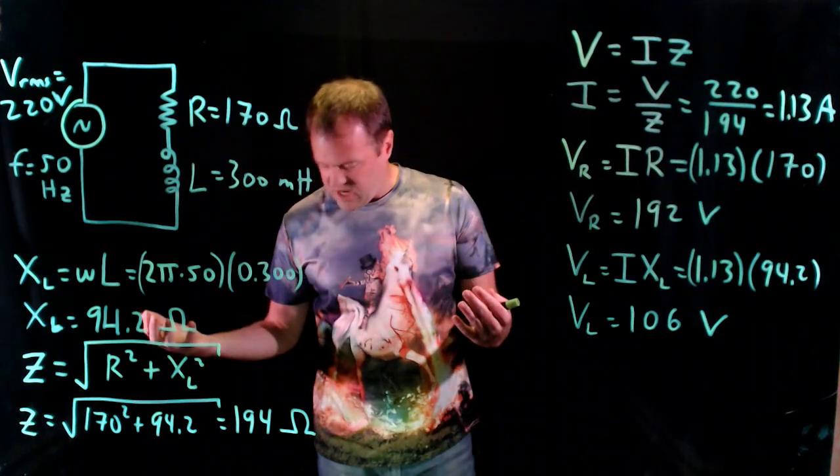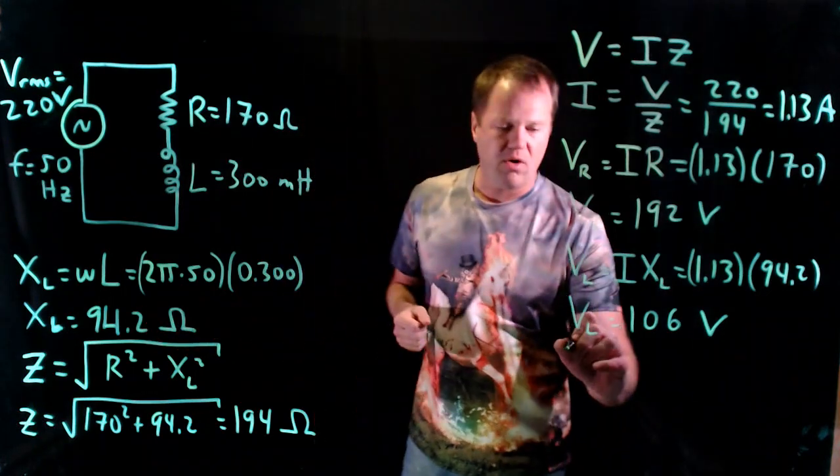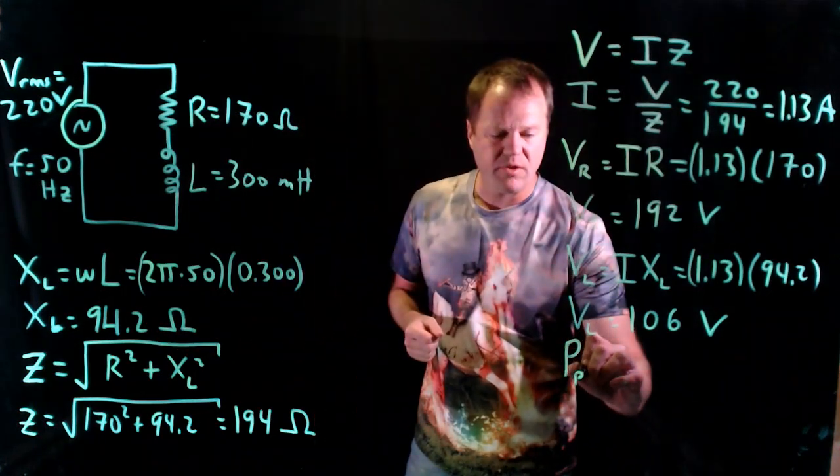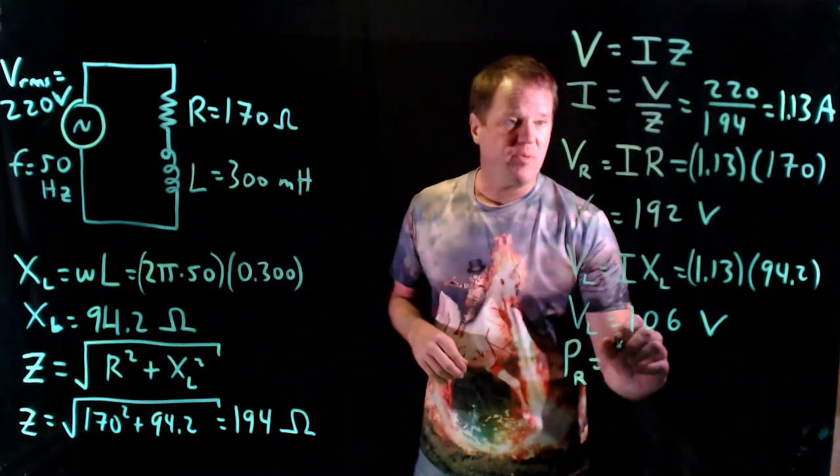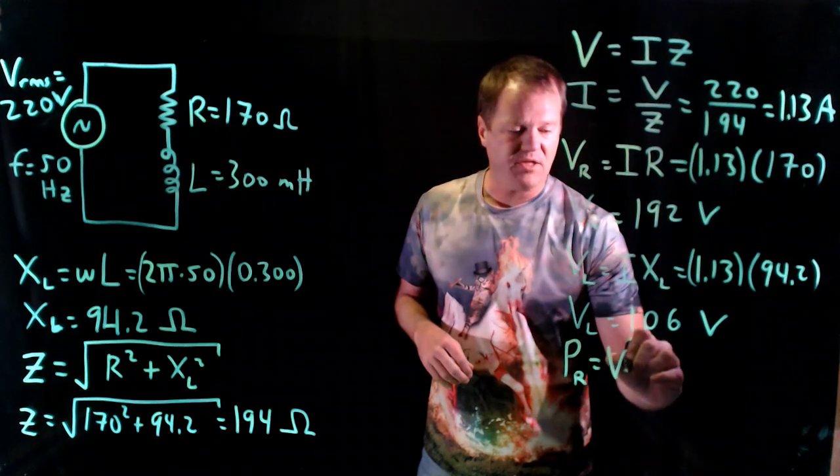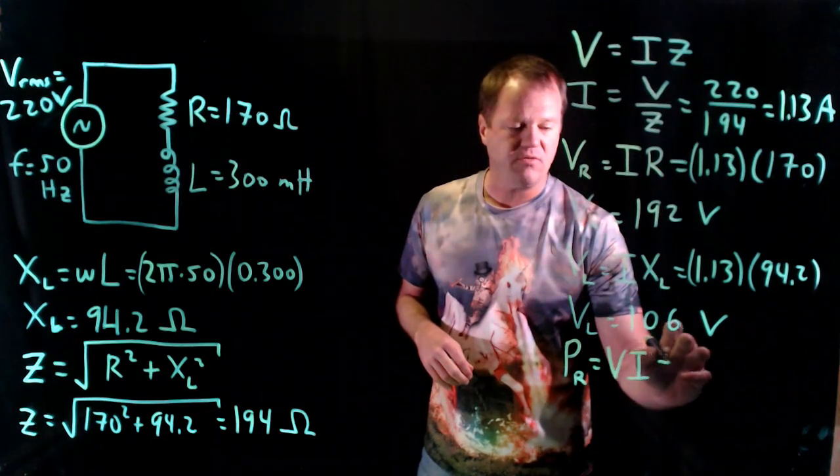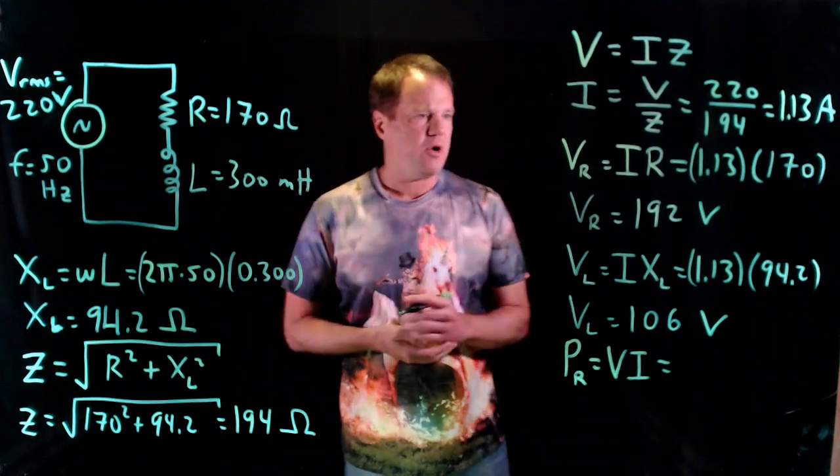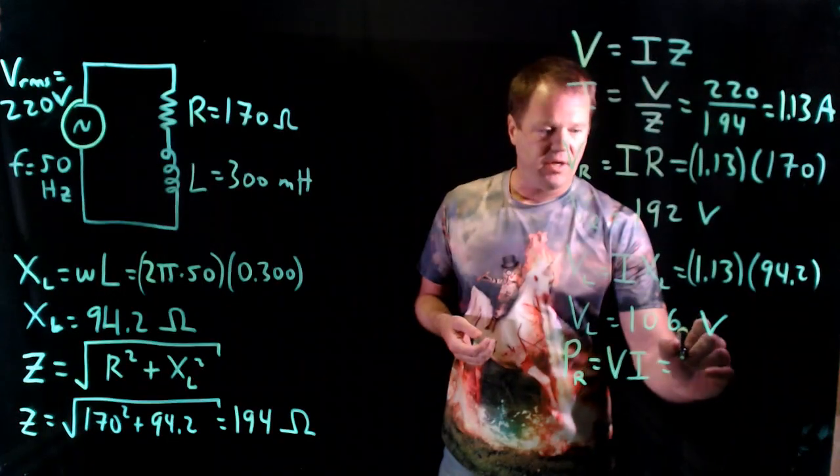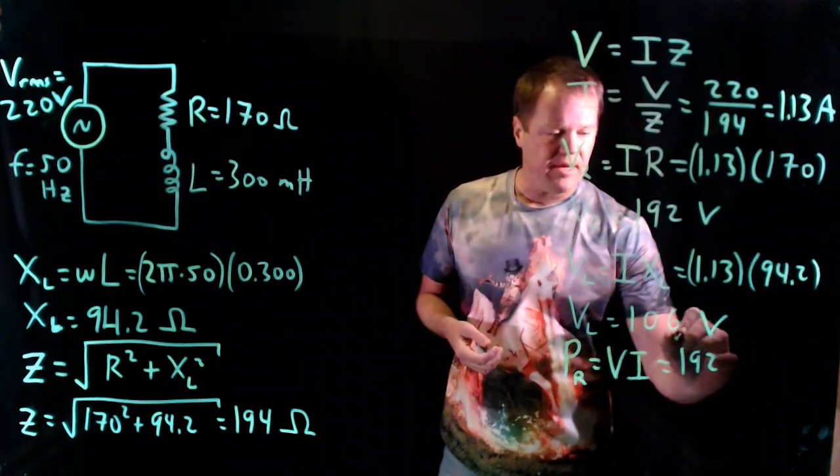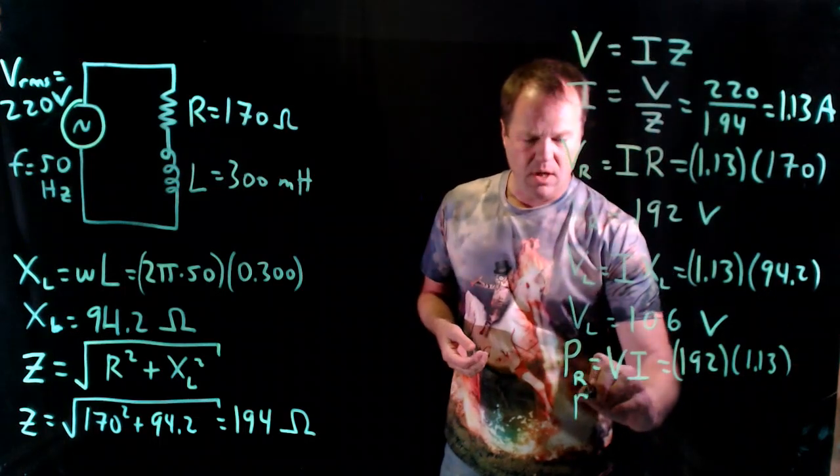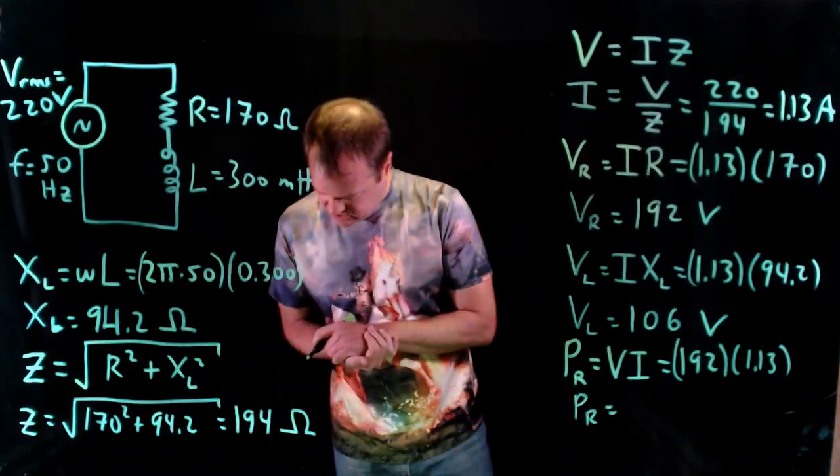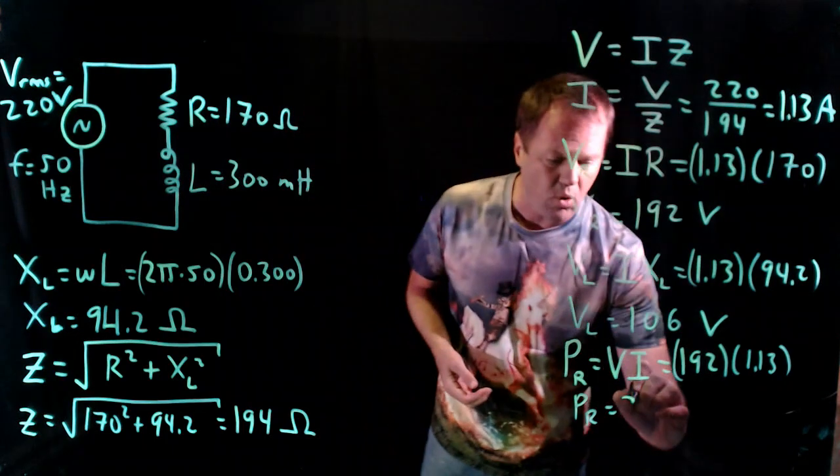Last thing is to calculate the power. So let's do the power of the resistor, and this is average power. So average power would be RMS voltage times current, or you could use V squared over R or I squared R. Either one would work. And so I get 192 volts times 1.13 amperes, and I get the power of the resistor is equal to 217 watts.